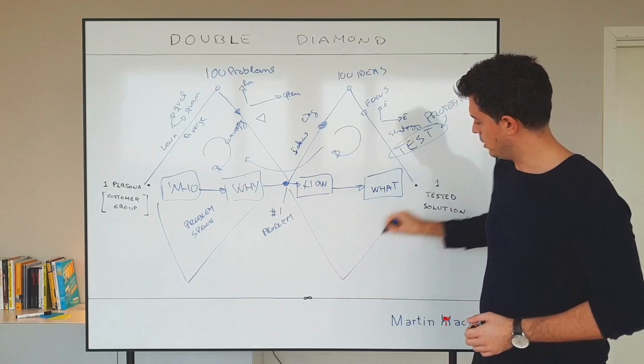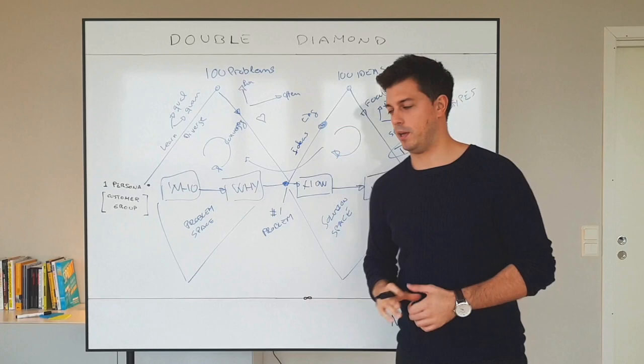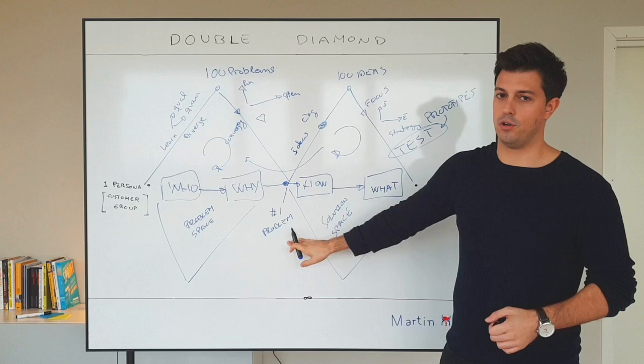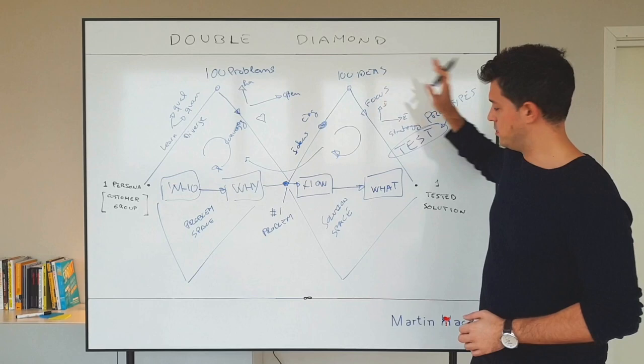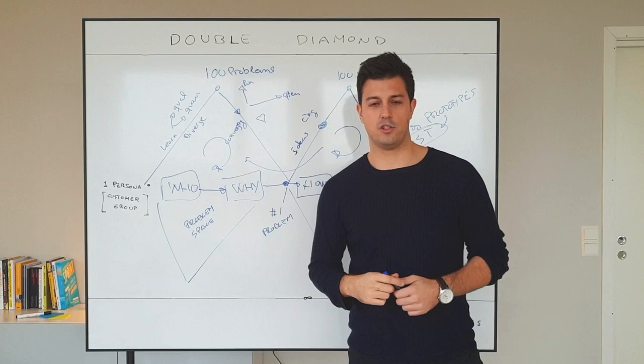This is what we call the solution space. And it's very important that it's integrated with also the problem space. At the end of the day, we have come through a journey where we take a customer group, we understand all of the problems, we focus on their root cause or main problem they have, the circumstances they are struggling with. We come up with ideas and we have a final tested solution. In a nutshell, this is the Double Diamond, and this is one of the best tools you can have to go from a person or a customer to a solution that they desire.